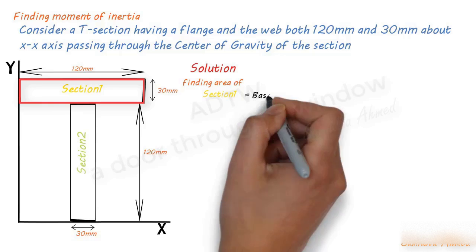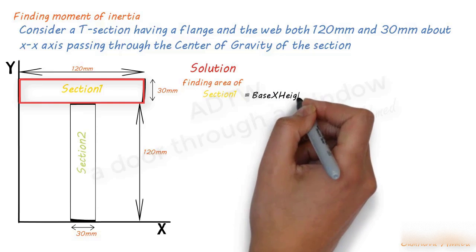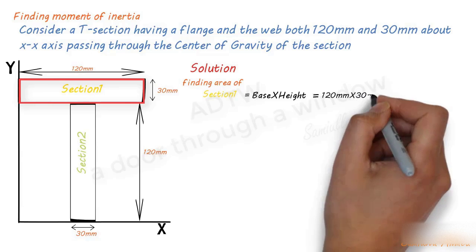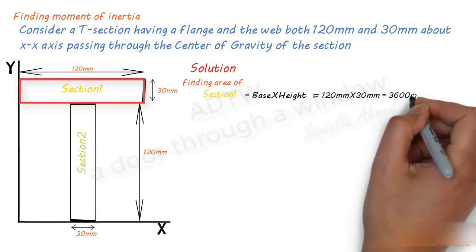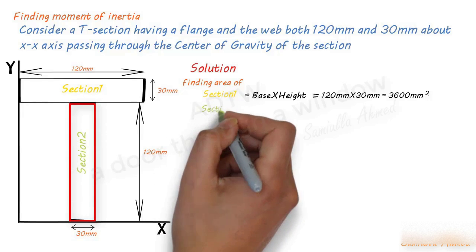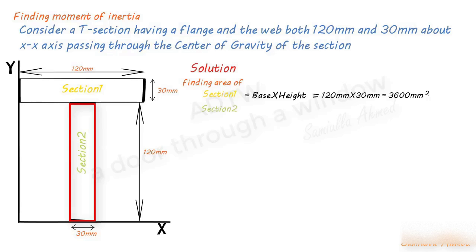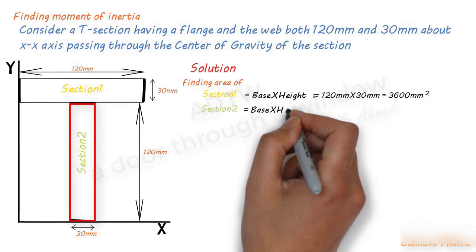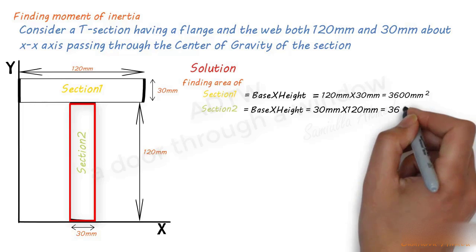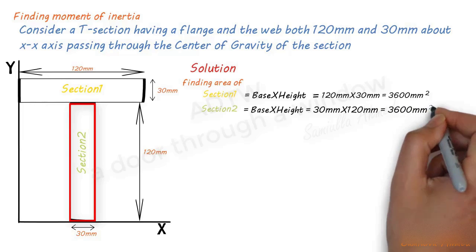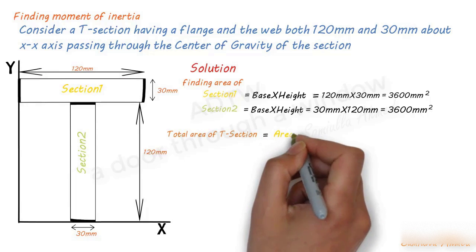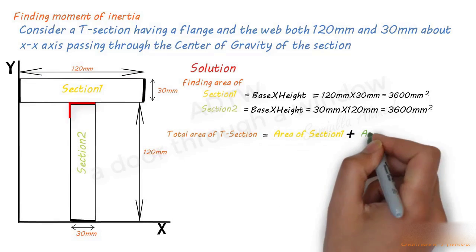Area of Section 1 is base multiplied by height, which equals 120 millimeters multiplied by 30 millimeters, equaling 3600 mm². Area of Section 2 is also base multiplied by height — base is 30 millimeters and height is 120 millimeters — which also equals 3600 mm².